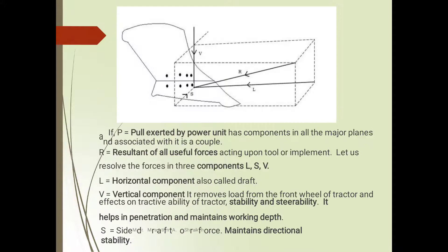See here in this diagram, I have shown the horizontal force and vertical force, these three forces acting. Firstly, P, pull exerted by power unit, see here, has components in all major planes and associated with its couple R. See here, this one is the resultant force. This total section is called as the moldboard. This one is the resultant of all useful forces acting upon tool or implement.